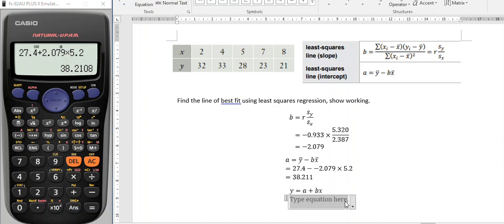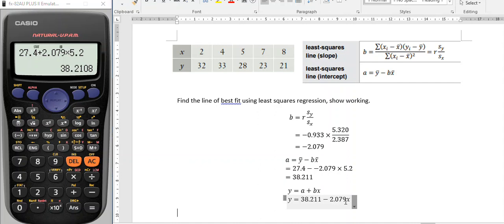Our regression line is then y equals the value of a, 38.211, plus negative is the same as minus 2.079x. There's my regression formula for this data. If I were to draw a scatter chart of this data, and then put a best fit line, this would be the equation of the line. That's it for now.